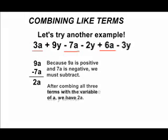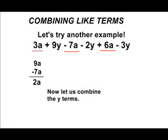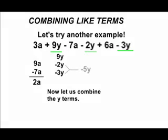Now we combine all the y variables together. We have a positive 9y and we have a negative 3y as well as a negative 2y. Now the negatives we are going to add together. Negative 2y and negative 3y would give us negative 5y or minus 5y. But the 9y is positive. So when we take negative 5y from 9y, that leaves us with positive 4y.